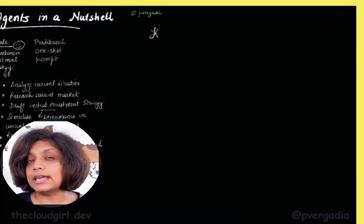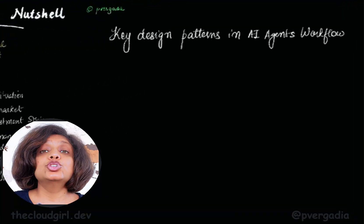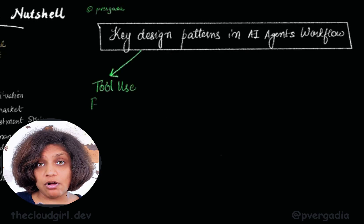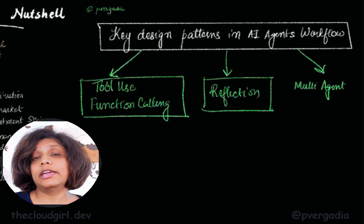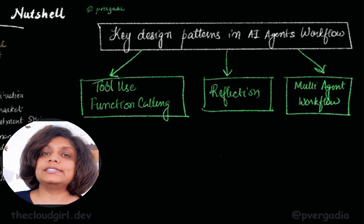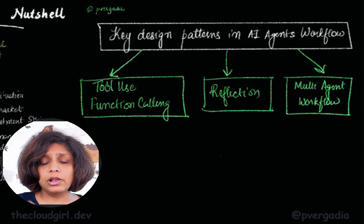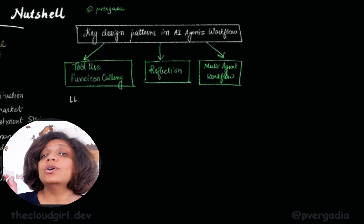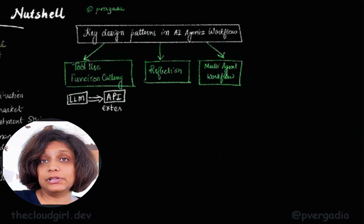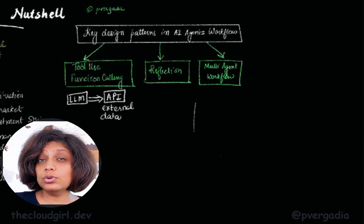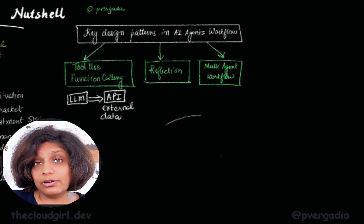Now let's look at the key design patterns in AI agent workflows. Tool use or function calling is one, then there's reflection, and then multi-agent collaboration. Tool use or function calling is the most commonly used right now. This is about AI using external tools to enhance its capabilities. These external tools are mostly accessed in the form of APIs.